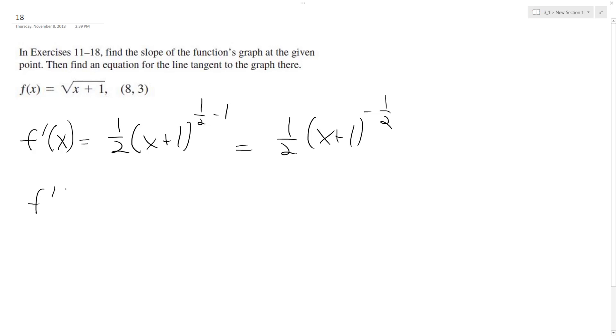So f prime at 8 is equal to 1 half, 8 plus 1, so that ends up being 9 raised to the negative 1 half. Got to be careful here, though. So 1 half divided by the square root of 9, which is 3, so we get 1 sixth out.